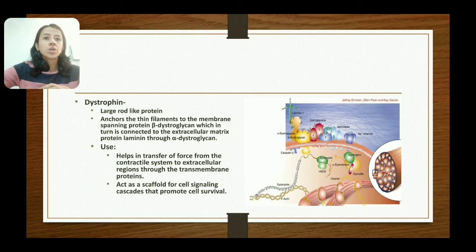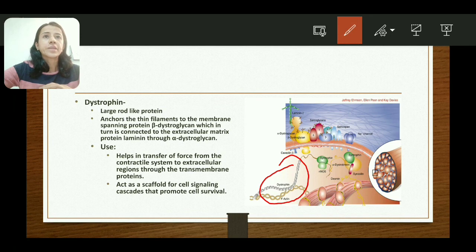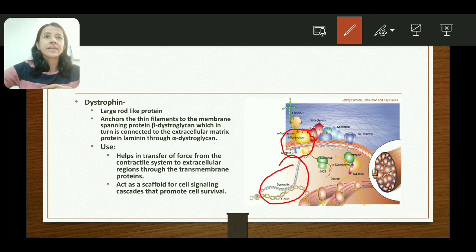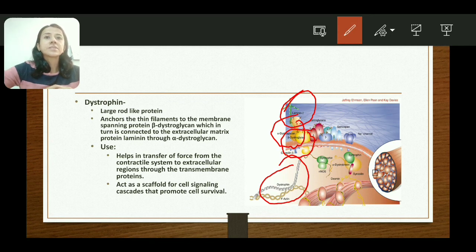Dystrophin is a large rod-like protein. It anchors the thin filament (F-actin) to the membrane-spanning protein beta-dystroglycane. Beta-dystroglycane is connected to the extracellular matrix protein laminin through alpha-dystroglycane. The role of dystrophin is to help transfer force from the contractile system to the extracellular region through the transmembrane protein. Dystrophin also acts as a scaffold for cell signaling cascades and promotes cell survival.